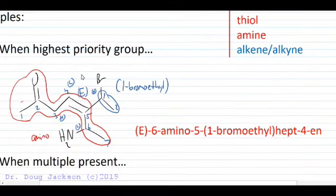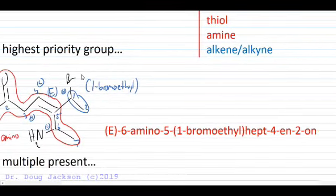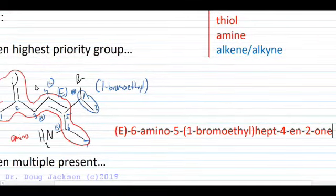And then seven carbons we have a hept-4-en, drop the E because of the vowel coming up next, 2-one. Okay so 6-amino-5-(1-bromoethyl)hept-4-en-2-one: hept because of seven carbons, alkene at carbon four, highest priority group is 2-one.